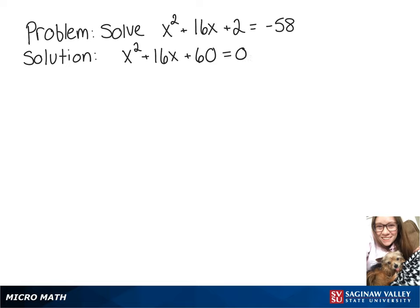And now we have an equation that we can factor. So we want to think of two numbers that multiply to give us 60 and when we add them together give us 16. So we can use 10 and 6 and then write this as x plus 10 times x plus 6 equals 0.